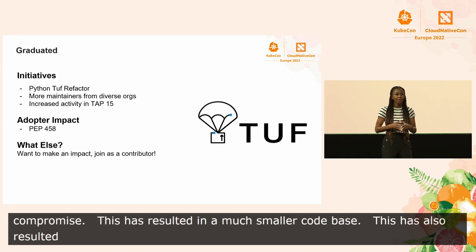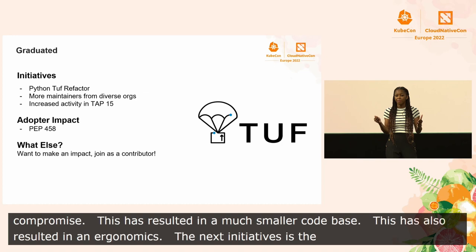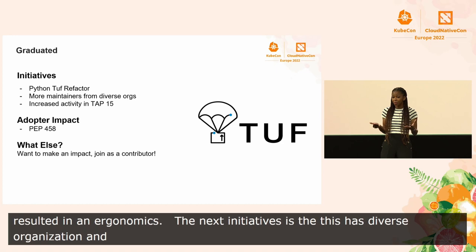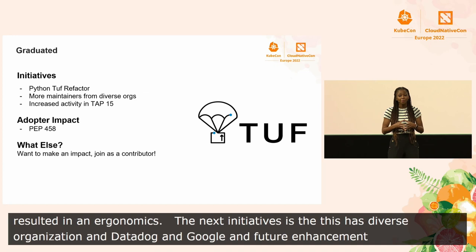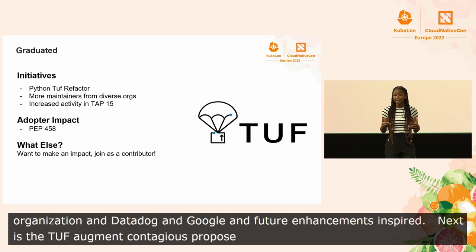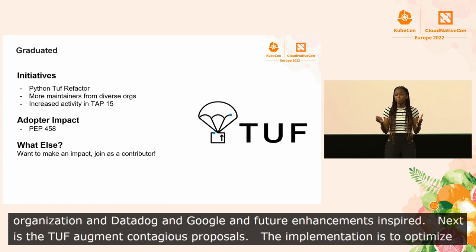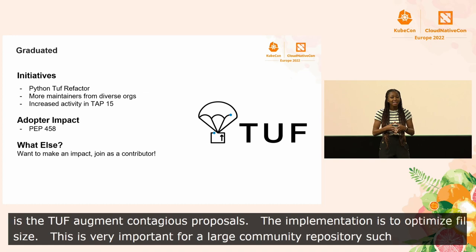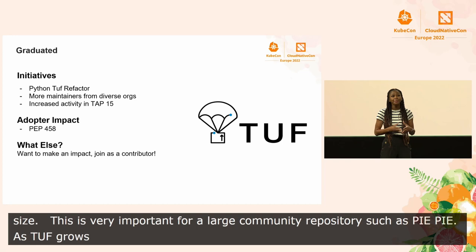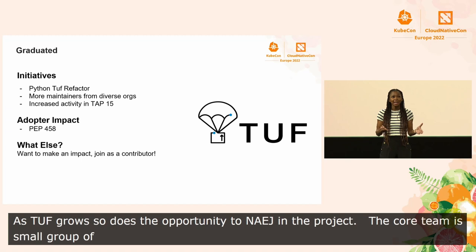The next initiative is the revitalization of GoTUF, which has meant more maintainers from diverse organizations like Datadog, Google, NYU, and VMware, and is also considering future enhancements inspired by Python TUF. Next is the TUF Augmentation Proposals, aka TAP. The increased activity in TAP 15 is to drastically optimize file size when using hash bin delegation — very important for large community repositories such as PyPI or PEP 458. The core team is a small group of welcoming people from academia and industry. If you want to make an impact on software supply chain security, join the TUF CNCF Slack channel.